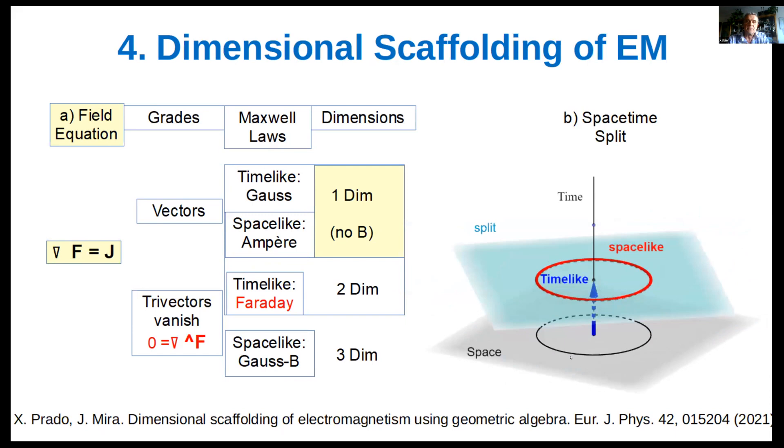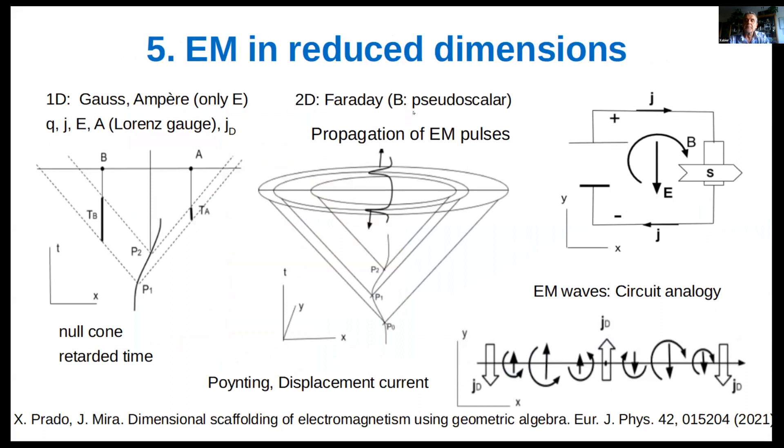One dimension is enough to introduce magnitudes like charge, current, electric field, potential, gauge, and displacement current, although magnetic fields do not exist in one dimension. Null cones and retarded time are essential already in 1+1 Minkowski spacetime. Faraday's law for induction of magnetic field appears in two dimensions, and propagation of pulses at the speed of light can be visually analyzed in spacetime diagrams.